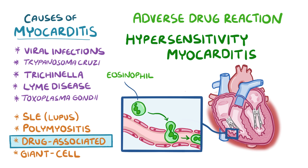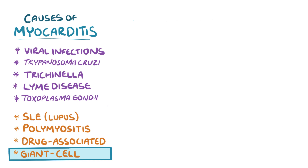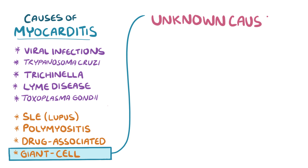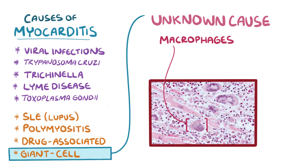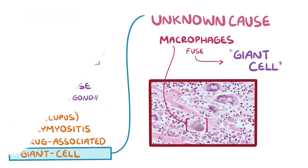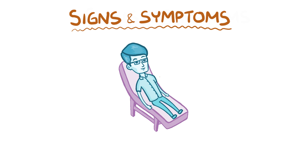Hypersensitivity myocarditis is when eosinophils get into the blood vessels in the myocardium. Finally, there's giant cell myocarditis, which causes inflammation in the heart from an unknown cause. The key finding is that macrophages — immune cells that engulf foreign substances — start to fuse together to form a single giant cell, hence the name.